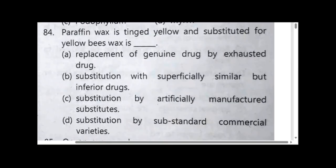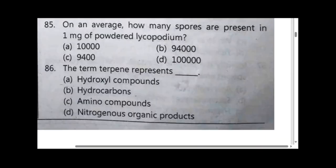Paraffin wax is tinged yellow and substituted for yellow beeswax — option C, substitution by artificially manufactured substitutes. On an average, how many spores are present in 1 mg of powdered lycopodium? Option B, 94,000.